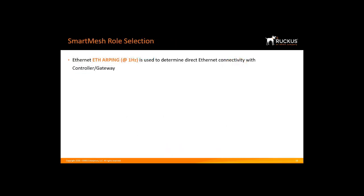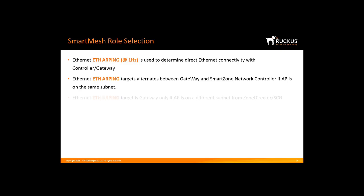Let's review the smart mesh role selection. The AP will use ARPs to determine connectivity to the gateway or to the controller. If the gateway and the controller are on the same subnet, the AP will alternate ARP checks. If the gateway and controller are on different subnets, the AP will check connectivity to the gateway only.